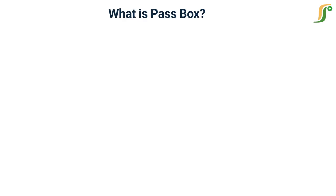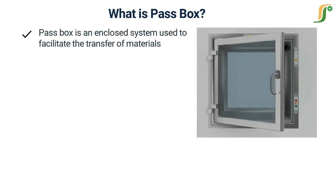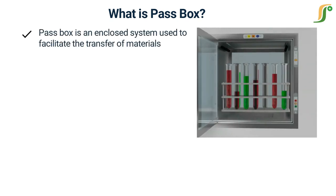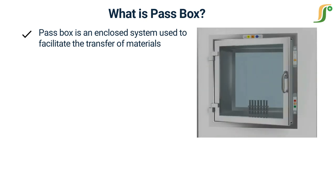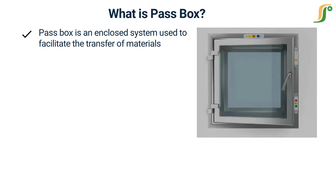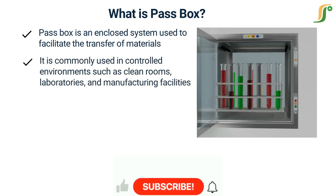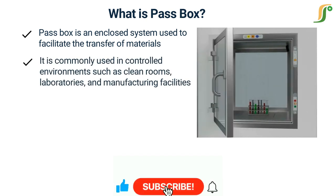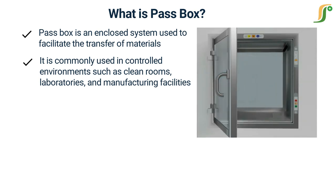A pass box, also known as a transfer hatch or transfer chamber, is an enclosed system used to facilitate the transfer of materials or equipment between areas with different levels of cleanliness. It is commonly used in controlled environments such as cleanrooms, laboratories, and manufacturing facilities where contamination control is crucial.